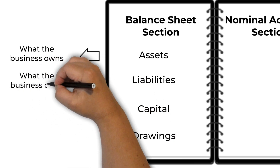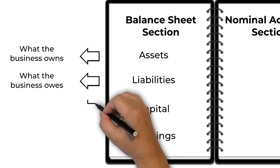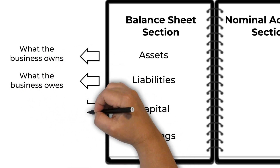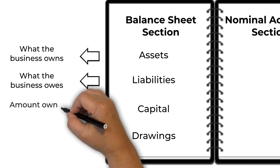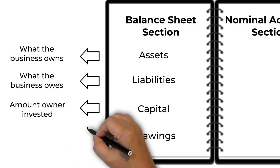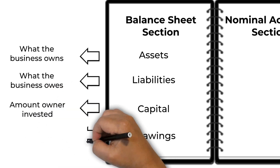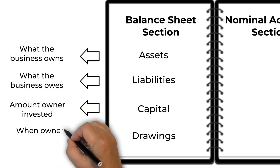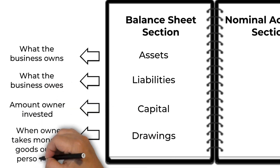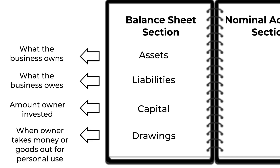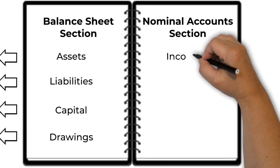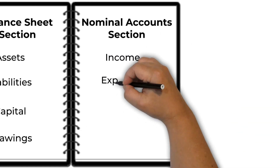Liabilities include things such as loans or money owed to suppliers. Capital is the amount the owner has invested in the business, and drawings are when the owner takes money or goods out for personal use.